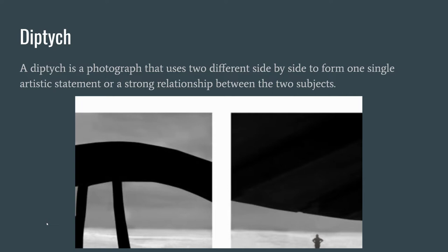In this diptych we have the same location but a shift in scale, and there's some very nice continuation here. The horizon line lines up, and we also have the back of this chair — or whatever it is — continuing on into the other picture.